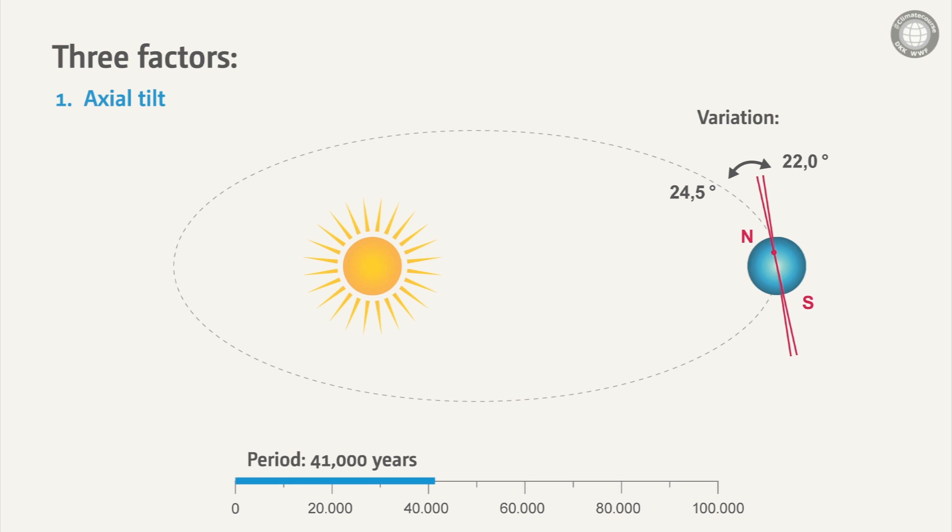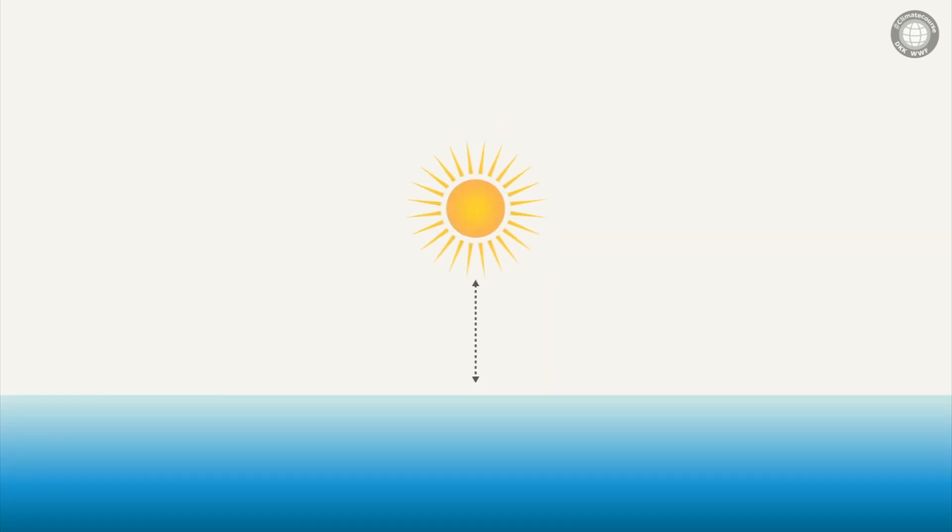Changes in this inclination result in regions, particularly the polar regions, receiving different amounts of energy from the Sun. You can easily comprehend this if you imagine that the height of the Sun's orbit above the horizon varies with the Earth's axial tilt.